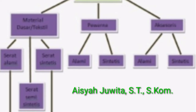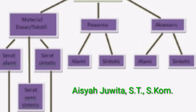Produk kerajinan tekstil secara umum terdiri atas material tekstil, warna, dan aksesori yang digunakan pada kerajinan tekstil. Jenis tekstil dilihat dari asal-usul bahan bakunya terdiri atas tekstil yang terbuat dari serat alam dan tekstil yang terbuat dari serat buatan atau sintetis, serta semi-sintetis atau bahan alam yang diproses secara sintetis.